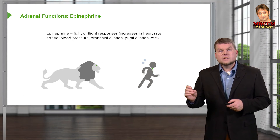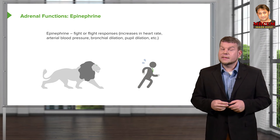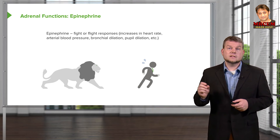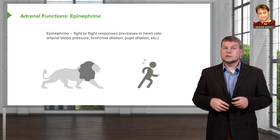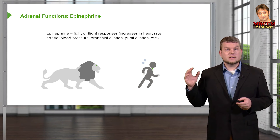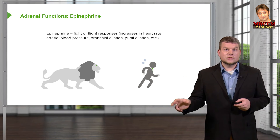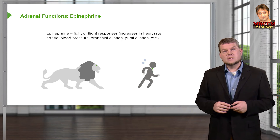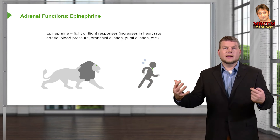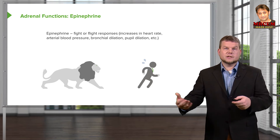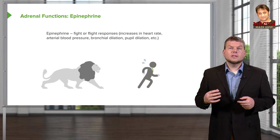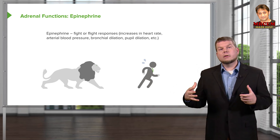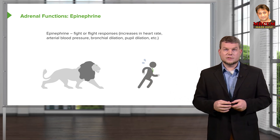The functions of epinephrine are very similar to sympathetic nervous system fight-or-flight responses. You get increases in heart rate, increases in arterial blood pressure, and all the myriad responses associated with this fight-or-flight reaction — including pupil dilation, as well as getting more air into the lungs with bronchodilation.